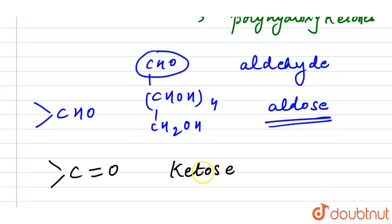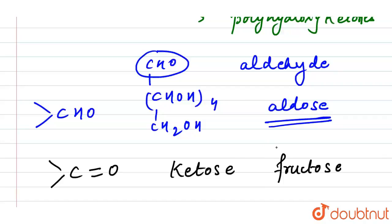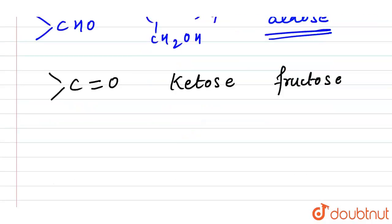Carbohydrates that have a C=O (keto) group are categorized as ketose. For example, fructose belongs to the category of ketose. Let's look at the structure of fructose to make this clearer.